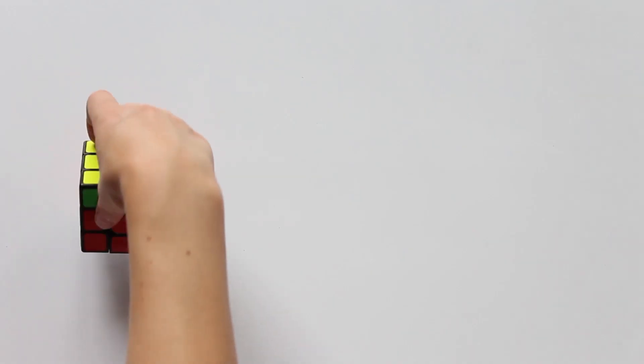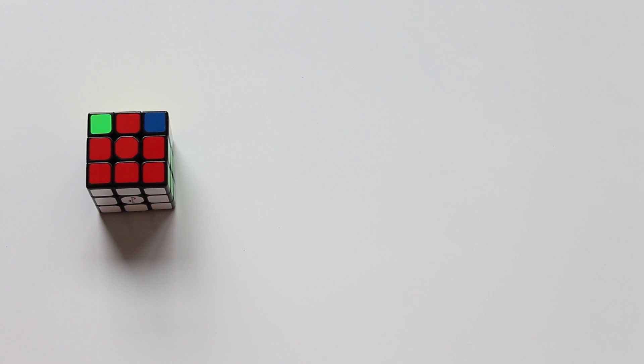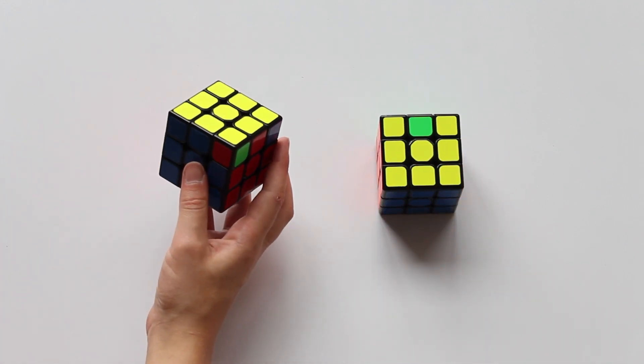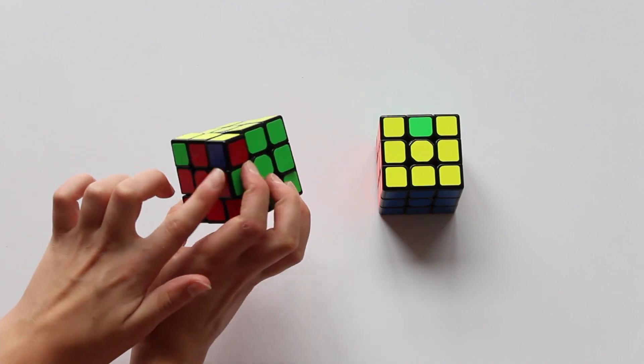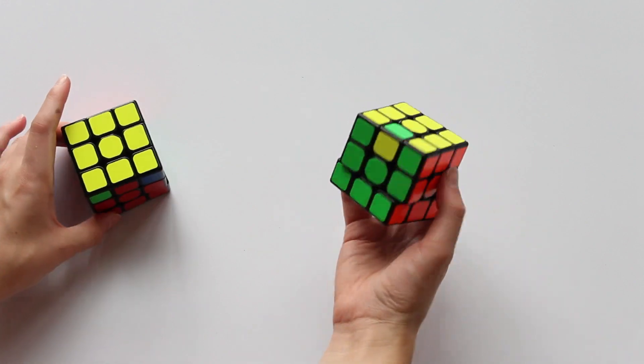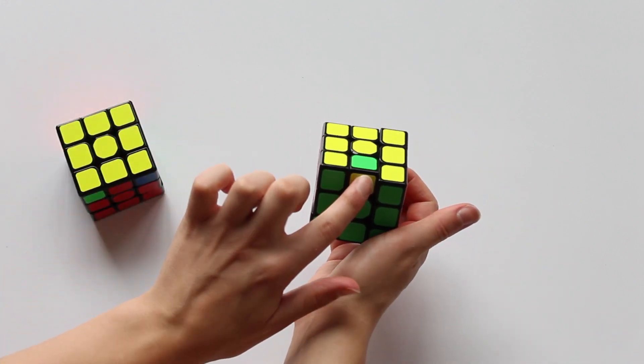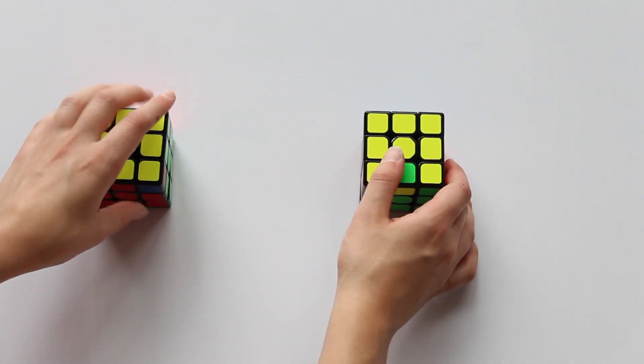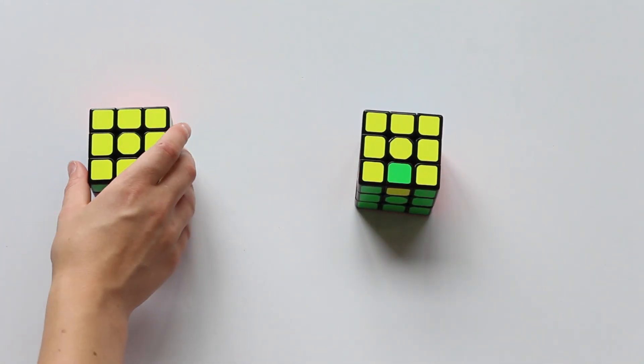Take a look at these two cubes. Both are not solvable according to the fundamental theorem of cubology. The one on the left has an odd permutation for the corners and an even one for the edges, and the cube on the right has one flipped edge. Can we make the left cube look like the one on the right using only cube moves?